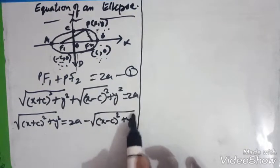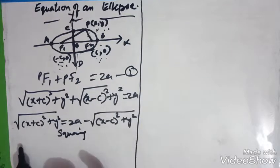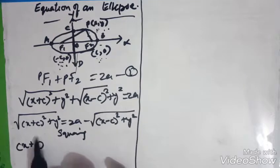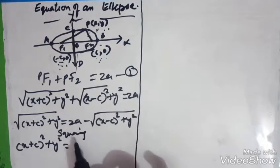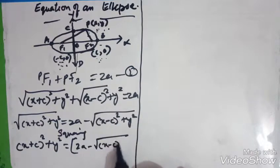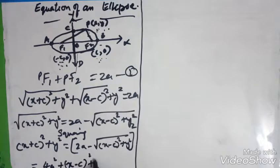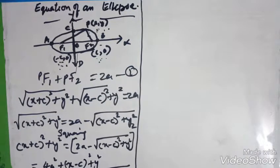Now squaring both sides, the square root and square cancel on the left. We get (x + C)² + y² equal to the expansion of (2A − √[(x − C)² + y²])², which is 4A² + (x − C)² + y² − 4A·√[(x − C)² + y²], using the (A − B)² formula.